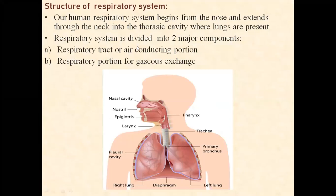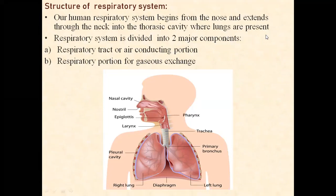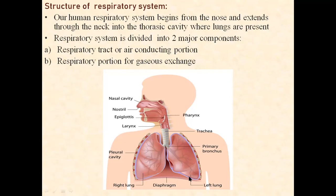So what is the structure of the respiratory system? Our human respiratory system begins from the nose and extends through the neck into the thoracic cavity, where the lungs are present. So our human respiratory system begins from the nose, extends through the neck to the thoracic cavity, and the end point is our lungs, which are present in the thoracic cavity.